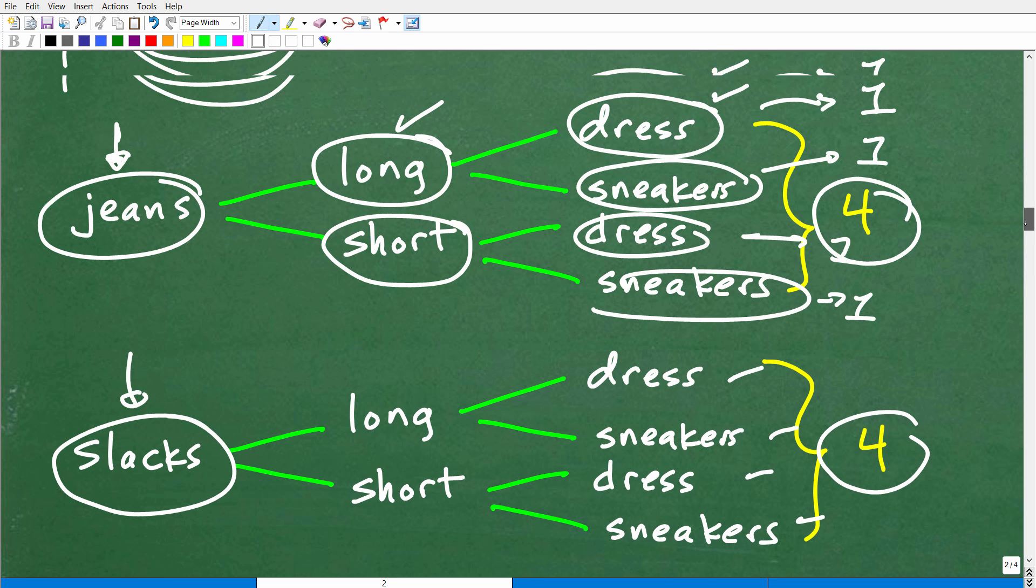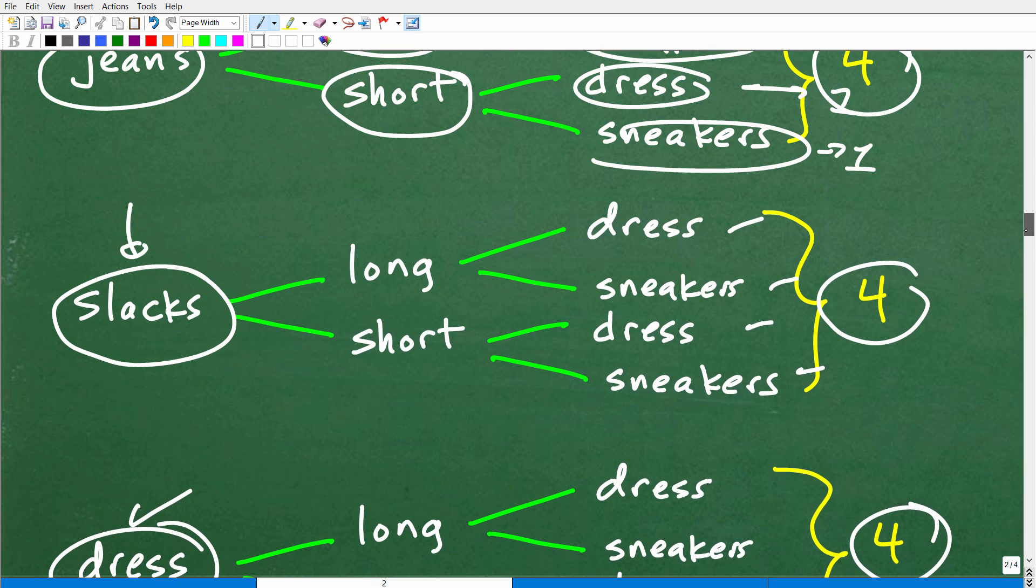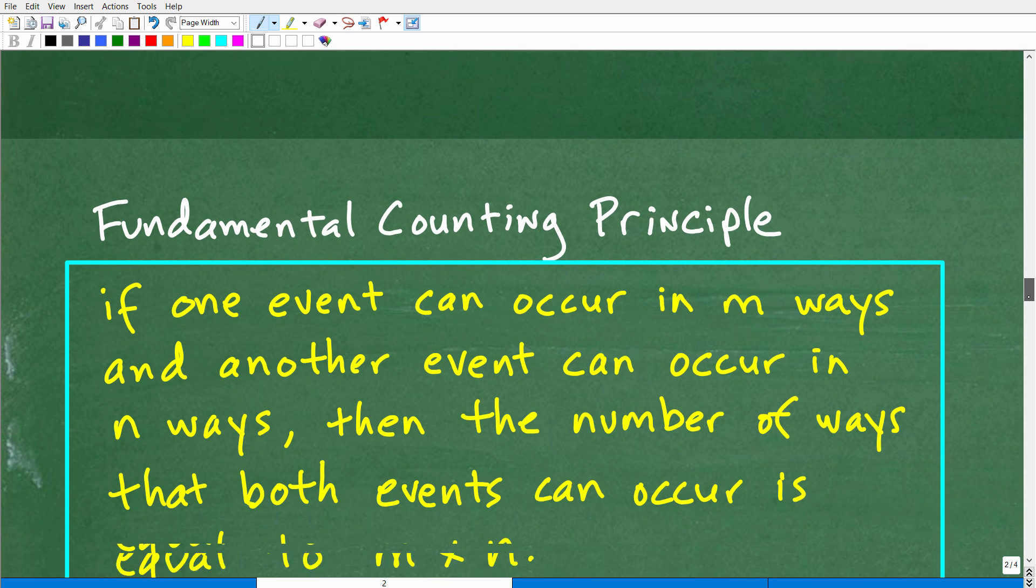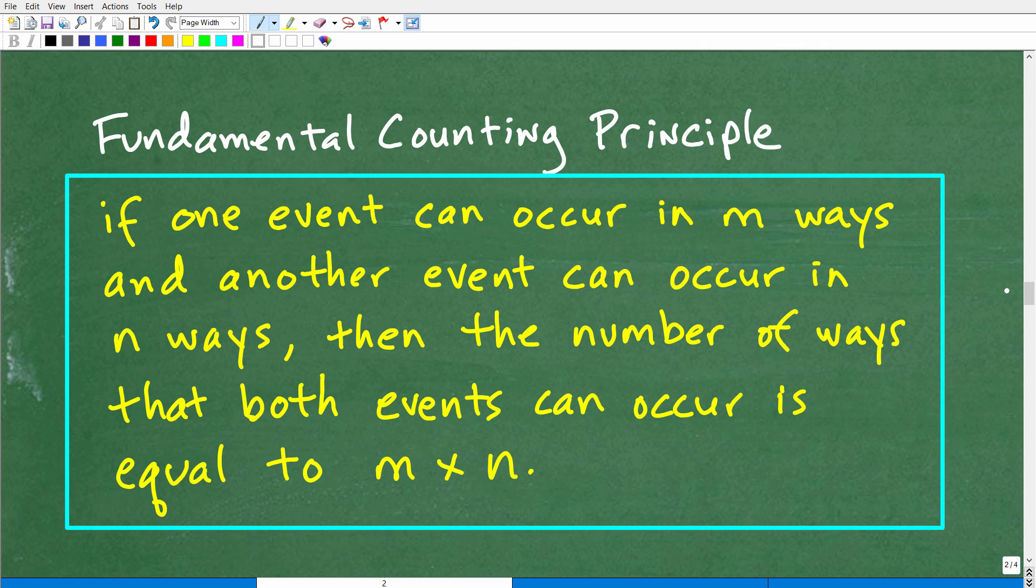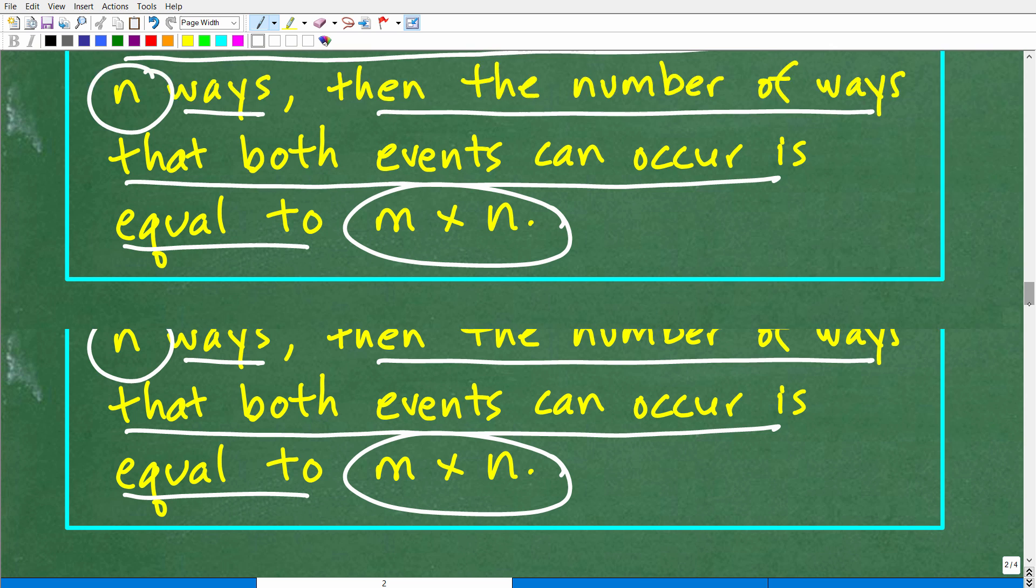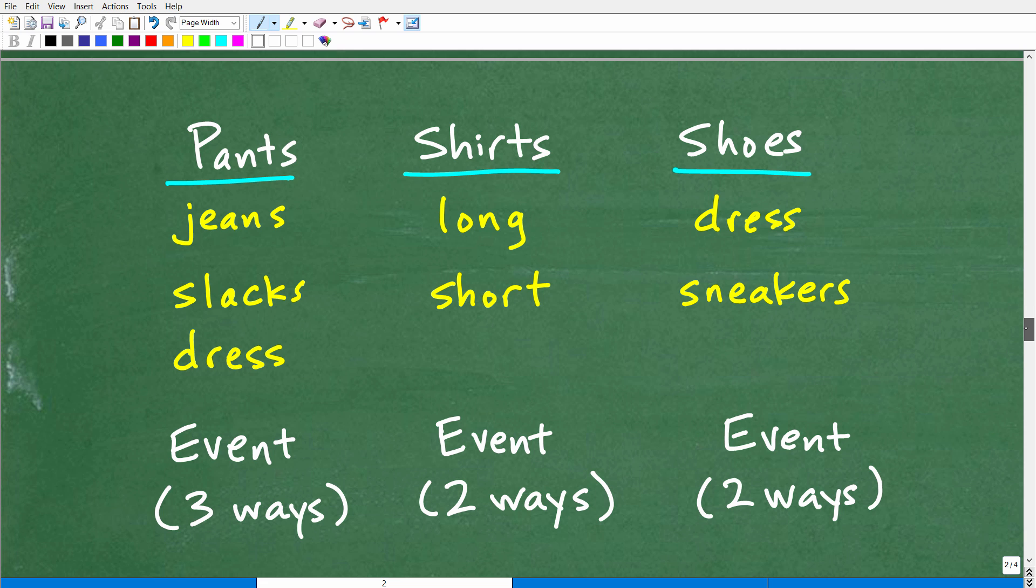All right. So that's counting using a tree diagram. It's just a way to organize all the different things that we're trying to count. Now let's talk about this other way to count. And that's using the fundamental counting principle.